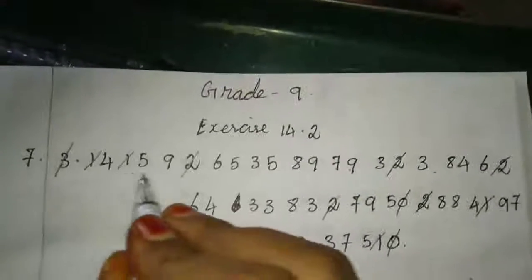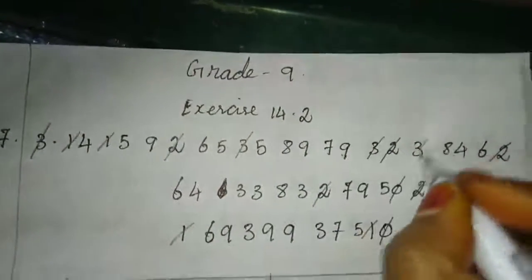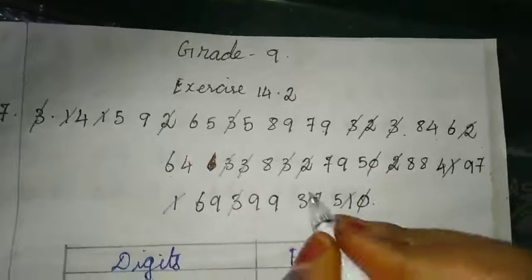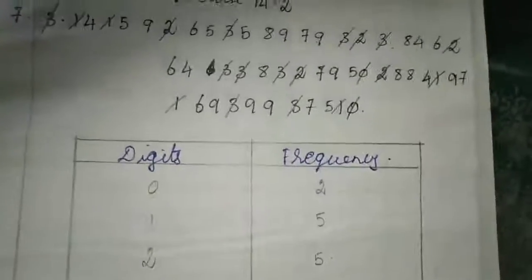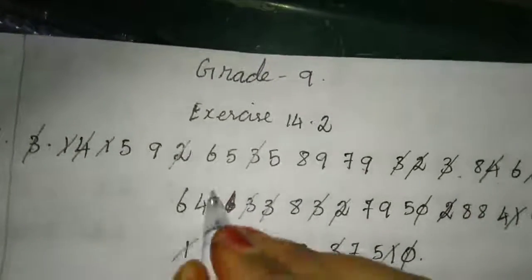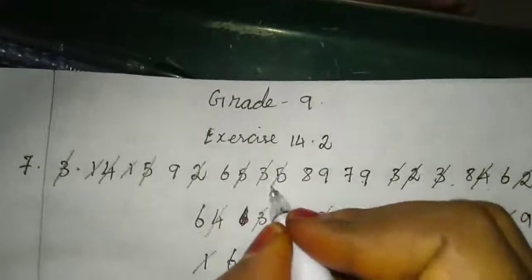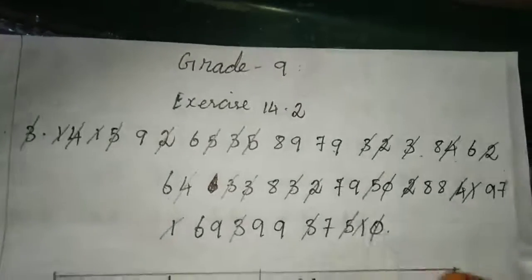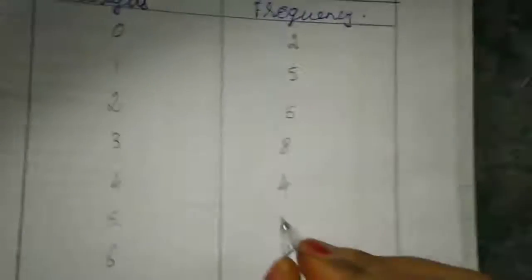Next three, we will refer. Counting through, we have eight times. Next four, counting, four we have four times. Next five, counting, five we have five times. Next six.